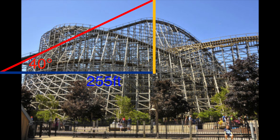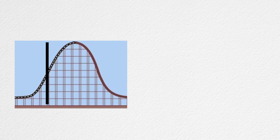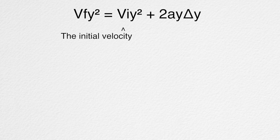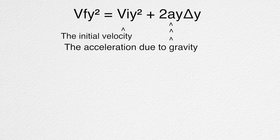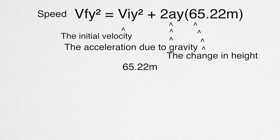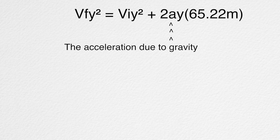Using basic trigonometry with an angle of 40 degrees and a length of 255 feet, we can find the new height of RMC Mean Streak, which is approximately 213.97 feet. Now that we know how tall RMC Mean Streak will be, we want to know how fast it will be. To find the top speed, we're using the formula: initial velocity squared plus the acceleration due to gravity times the change in height equals the speed squared. The height is 213.97 feet, which converts to 65.22 meters.